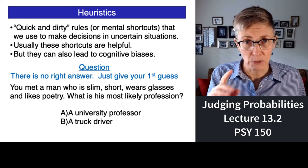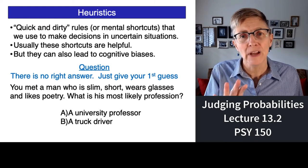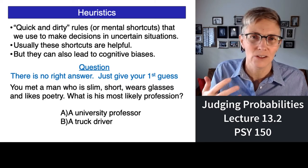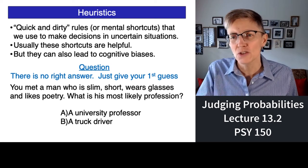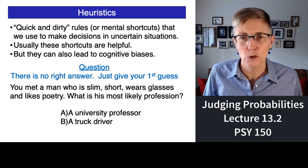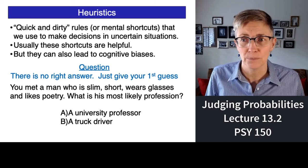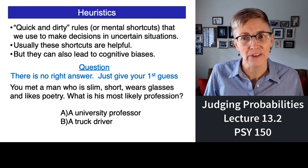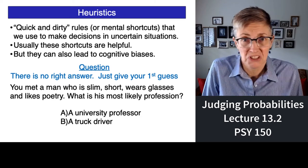I'm going to give you an example of a classic Kahneman and Tversky question, but I won't give you the answer until the next lecture. Just give me your gut instinct: You meet a man who is slim, short, wears glasses, and likes poetry. What is his most likely profession — is this gentleman a university professor or a truck driver? Take your best guess, just gut instinct.